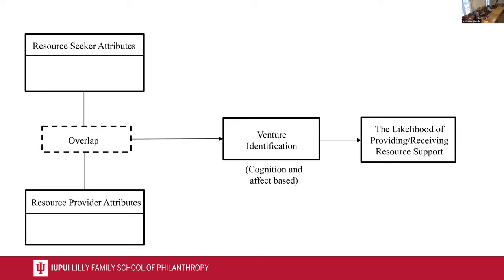Resource providers tend to choose organizations that share more similar and overlapping attributes with their own. The hypothesis is that a higher level of overlap between resource-seeker attributes and resource-provider attributes may lead to a higher level of venture identification, and that will lead to a higher likelihood of providing resources.